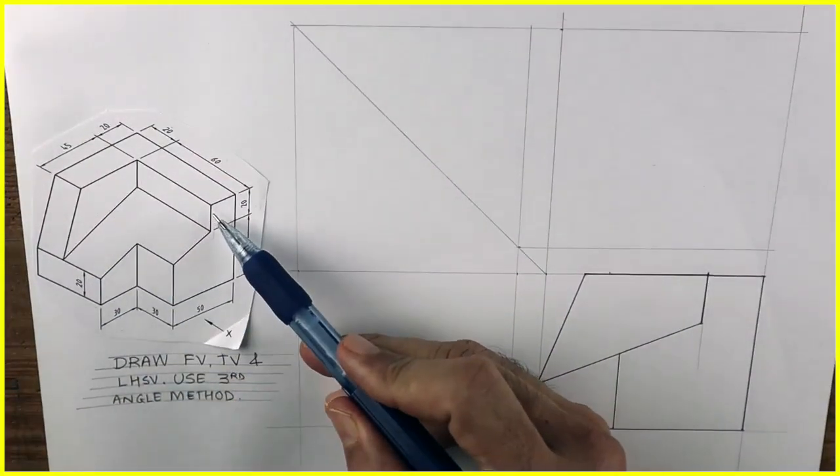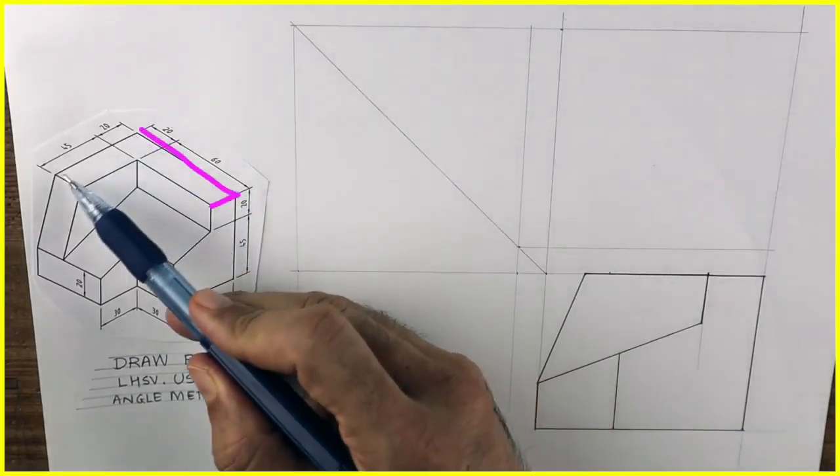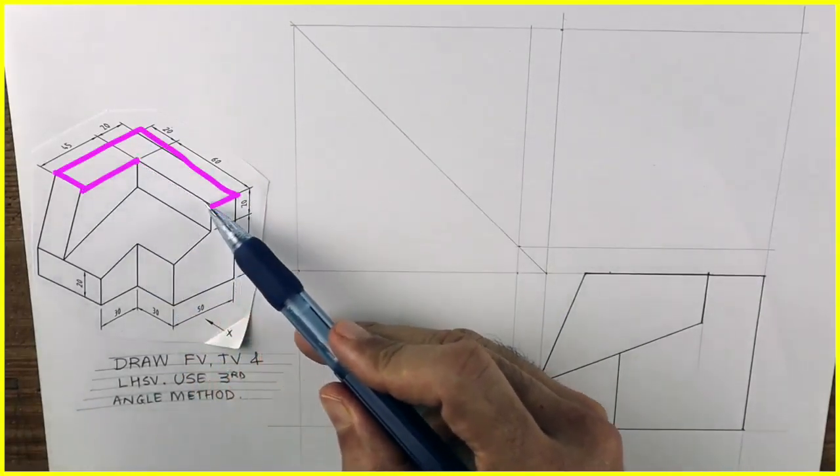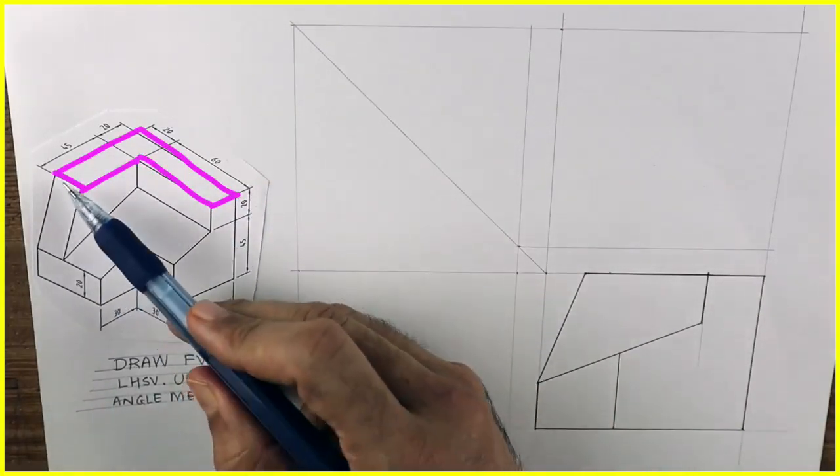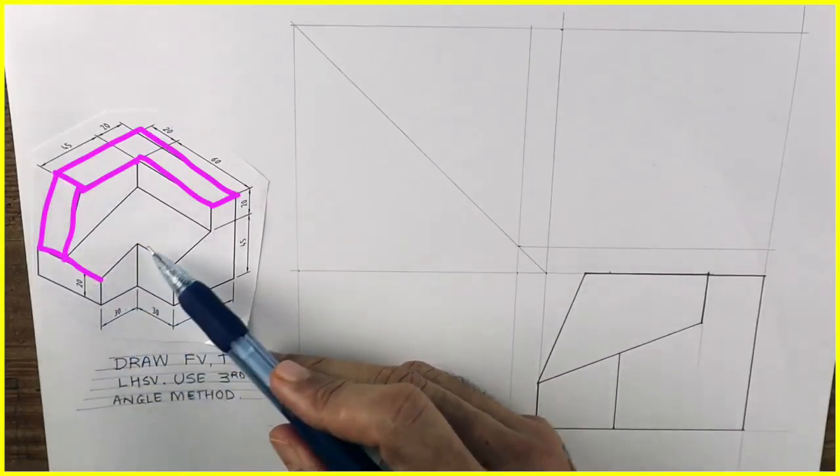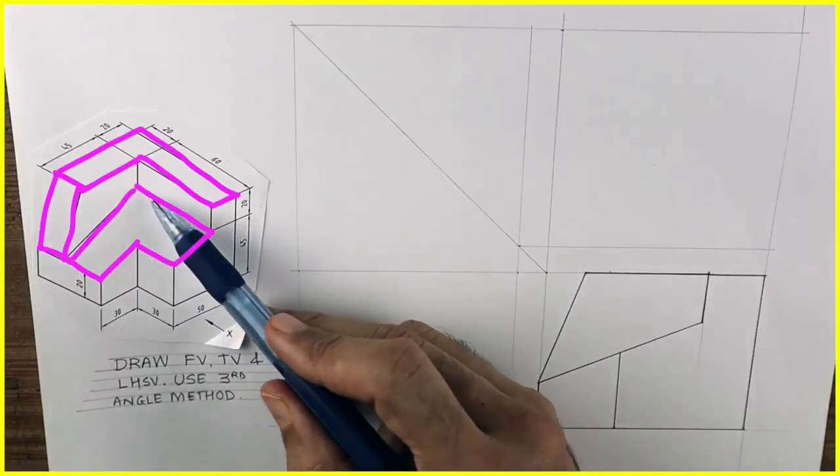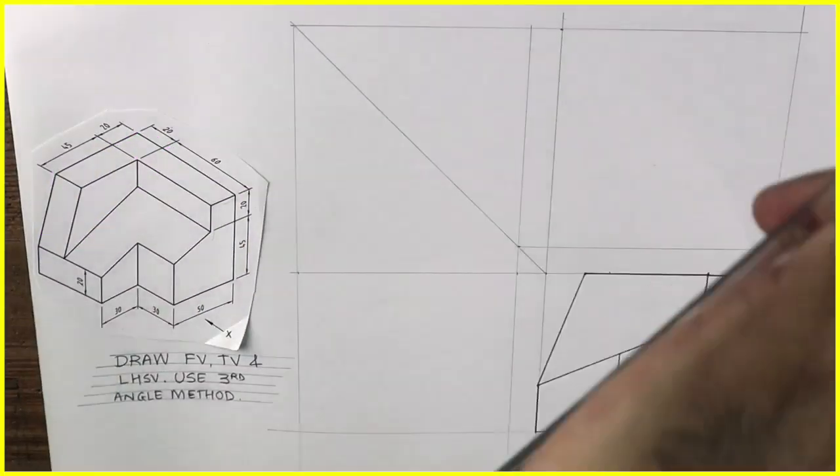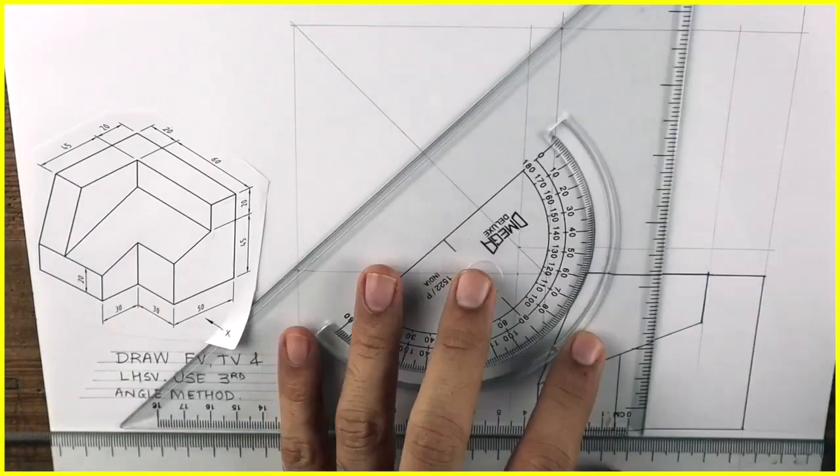After that in top view you will see this L shape, right? Then we'll see this rectangle and this L shape again which is slope. So first we'll start with that L. We'll project like this.